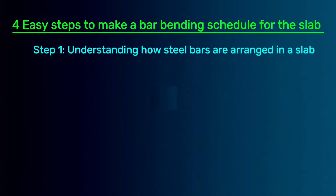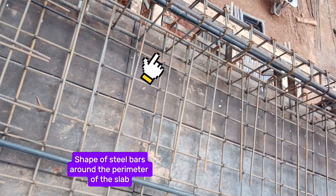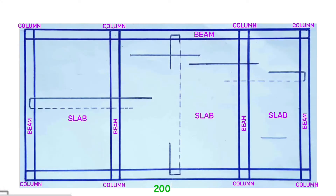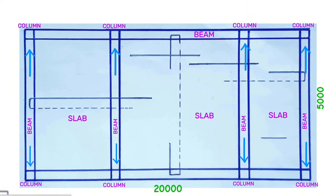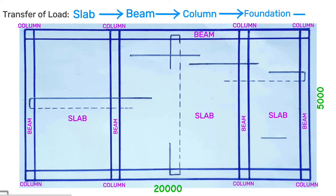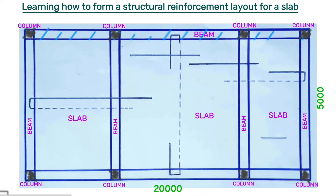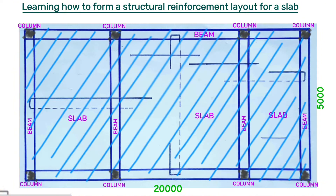The first step is understanding how steel bars are arranged in the slab. The fundamental knowledge about the arrangement of steel bars in the slab is that we use steel bars of this shape all around the perimeter of the slab. Considering a slab of 20 meters along the length and 5 meters along the width, load is transferred from the slab to the beams, then from the beams to the columns, then from the columns to the foundation, and then from the foundation to the soil or rock. These are beams covering the perimeter of the slab, and the shaded points are the columns. What covers all this area is what we call the slab.